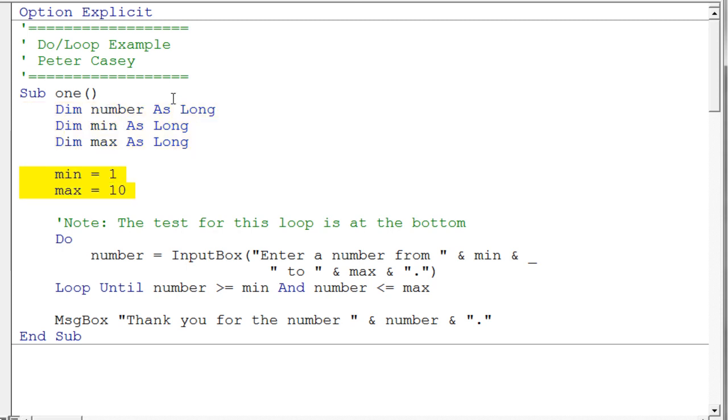What we're going to do here is we're going to ask the user to input a value within the range of our minimum and maximum number. We'd like to make sure that we get a valid number, so we're going to use a do loop.